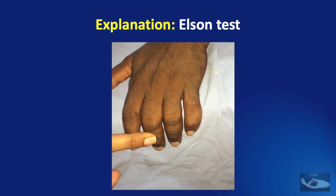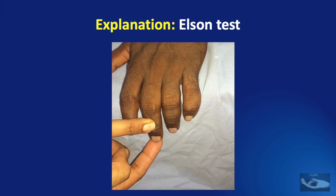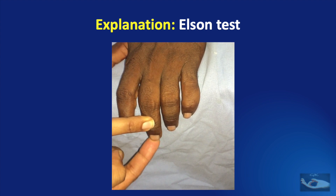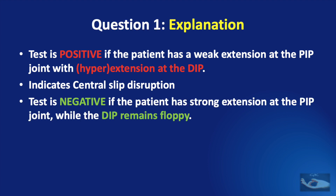If the central slip is intact, the examiner can feel increased tension of extension at the PIP joint, and at the same time the DIP joint will be floppy. The test is positive if the patient has weak extension at the PIP joint with hyperextension at the DIP joint, indicating disruption of the central slip. It is negative if there is strong extension at the PIP joint while the DIP joint remains floppy, indicating an intact central slip.